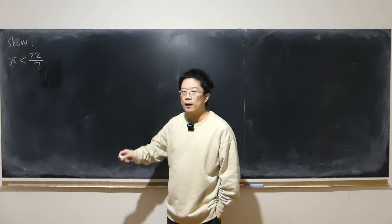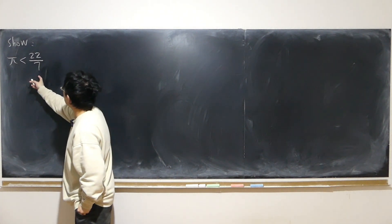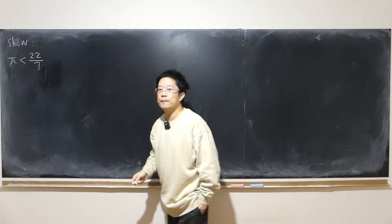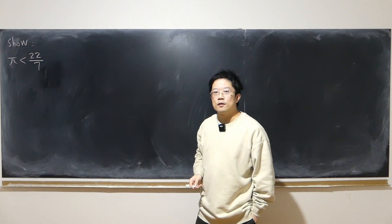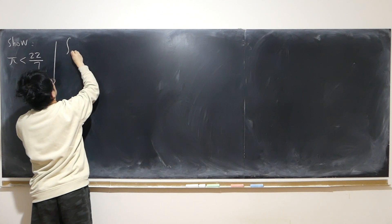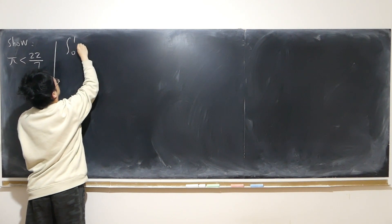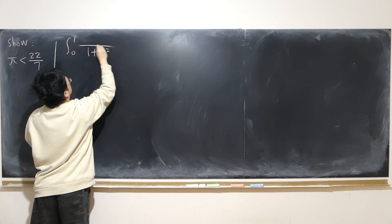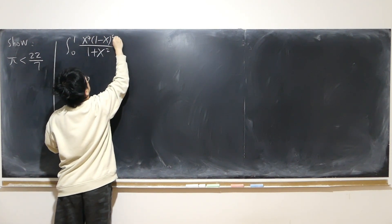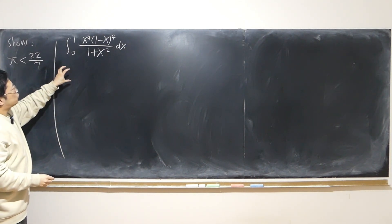I just came across this problem: to show that π is less than 22/7. If we divide 22 by 7, it's already 3.1-something, very close to π. The solution I found online is that somehow we construct an integral out of nowhere — the integral from 0 to 1 of x^4 times (1 minus x)^4 over (1 plus x²) dx. Even without motivation, let's dive into the calculation.